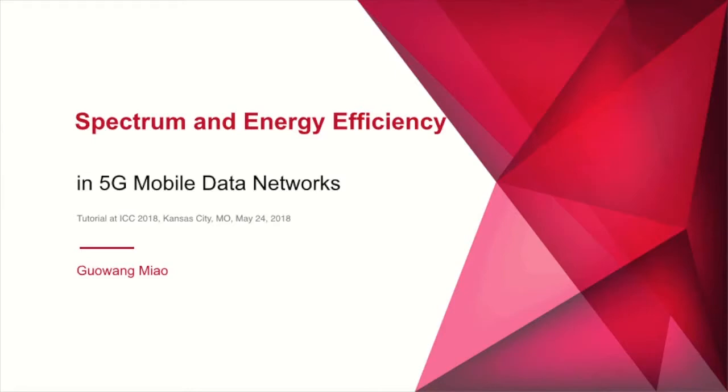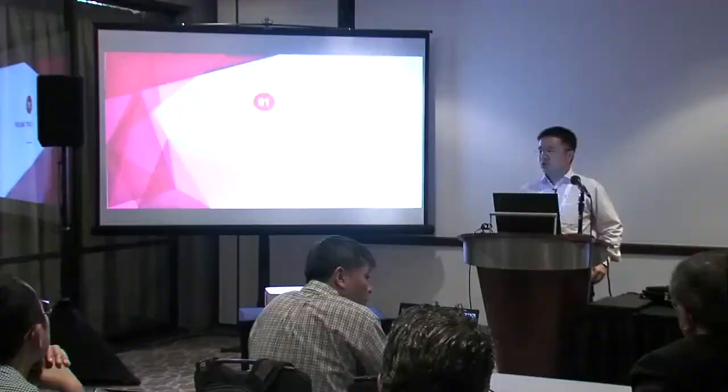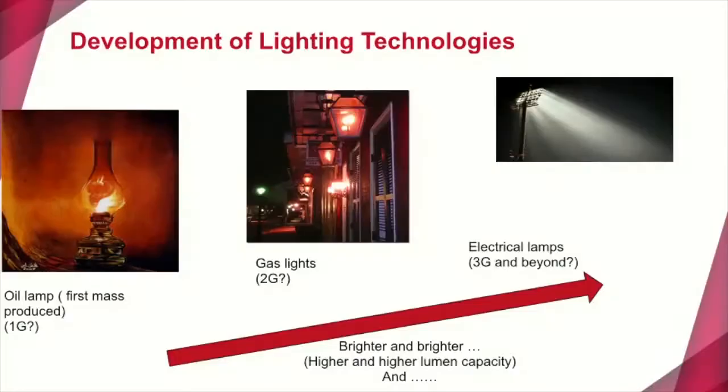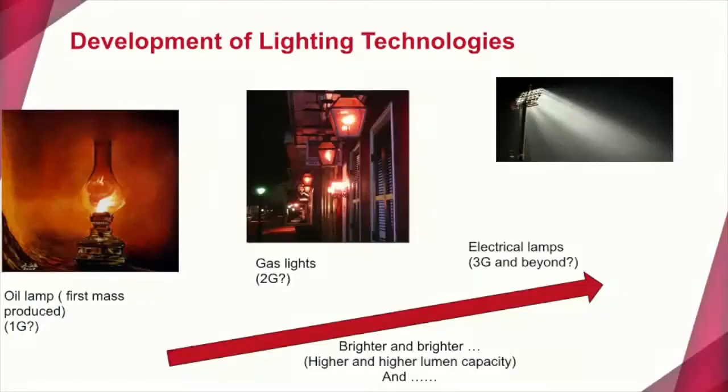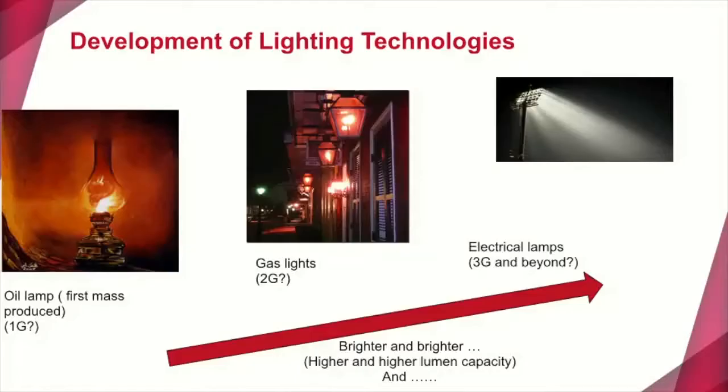Before I start introducing the technologies, I want to show the analogy between lighting and communications, because the lighting and communications are very similar to each other. Both are based on electromagnetic waves. If you look at the development of lighting technologies in the past, they also have something like a first generation, second generation, and third generation. The first generation is oil lamps — these were the first kind of lighting technologies massively produced and available almost everywhere in the world. Then later, people developed gas lights.